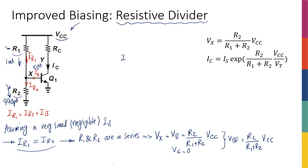What is nice about this expression is the fact that I have a collector current that is independent of beta.